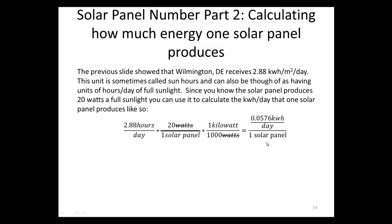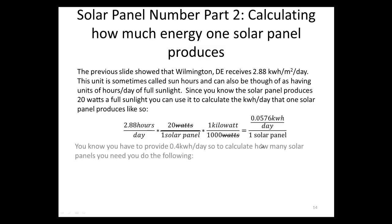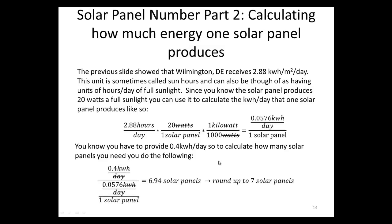We need to figure out how many solar panels are required to produce what we need. We have to provide 0.4 kilowatt hours per day, and each panel produces 0.0576 kilowatt hours per day. Dividing 0.4 by 0.0576 gives 6.94 solar panels. Since we can't have a fraction of a panel, we round up and need 7 solar panels.